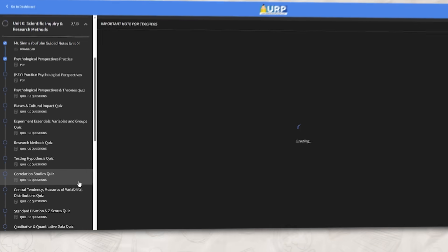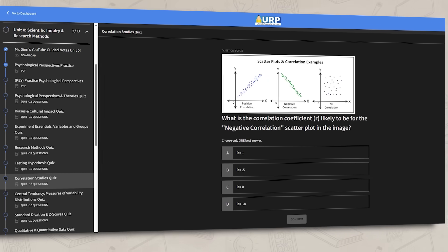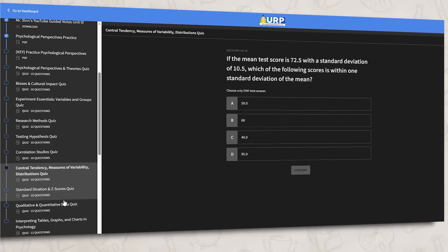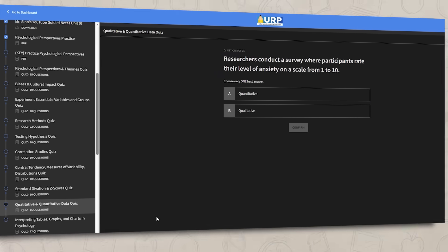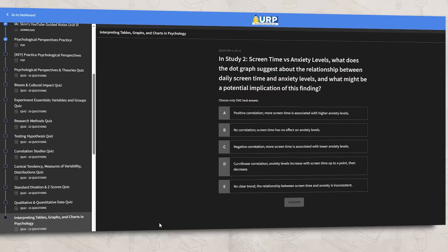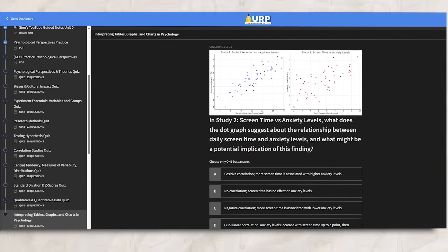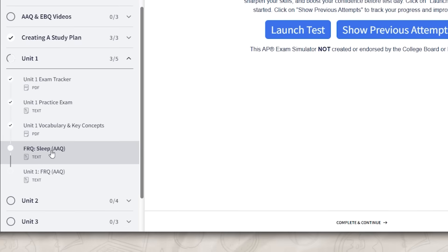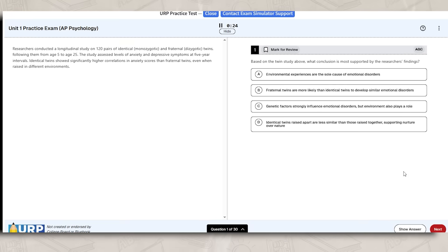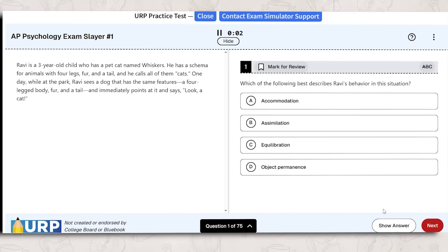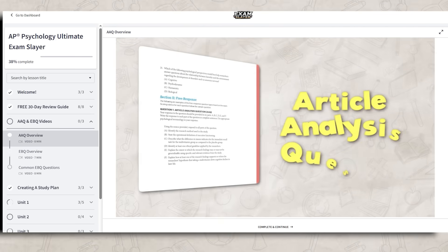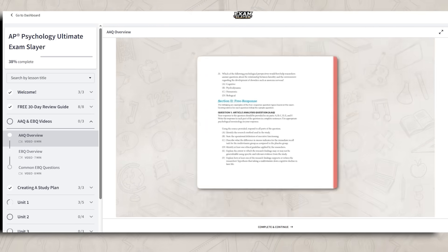If you want to take practice quizzes on these different statistics, you can find resources inside my Ultimate Review Packet, where I have a quiz on testing the hypothesis, correlational studies, central tendencies, measures of variability, standard deviation, qualitative and quantitative data, and interpreting tables, graphs, and charts. Plus, if you need more practice, you can check out my Exam Slayer, which has practice AAQs for each unit, full practice AP exams, an exam simulator, and AAQ and FRQ videos.